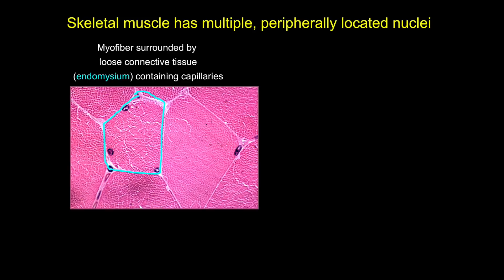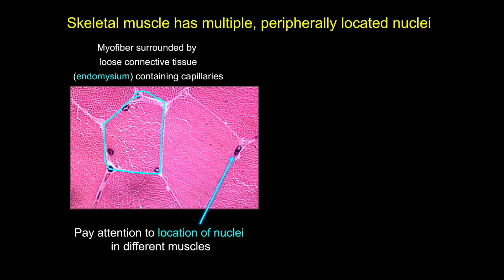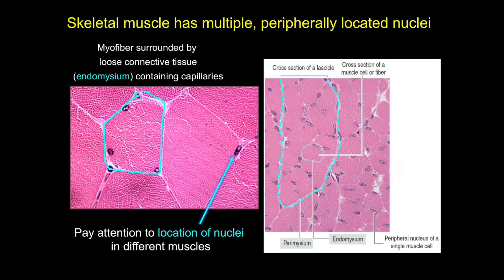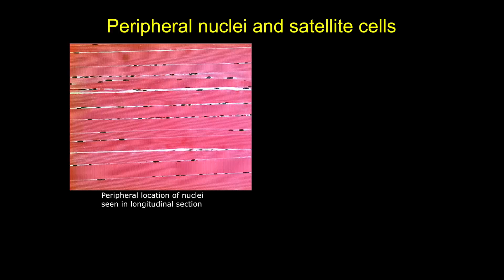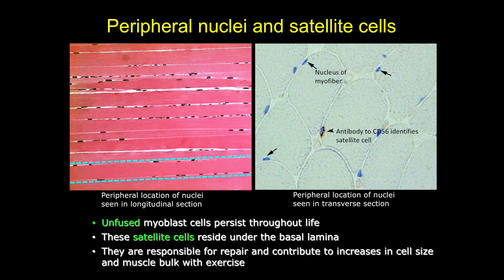Now let's look at what skeletal muscle looks like under the microscope. Each myofiber is surrounded by the endomysium sheath, which in cross-section outlines each pentagonal-shaped fiber. In skeletal muscle, the multiple nuclei are found around the periphery of the cell and almost look as though they're outside the cell. You can see both the perimysium surrounding a fascicle and the endomysium surrounding individual muscle fibers. In longitudinal section, the nuclei look almost as if they are between the fibers. Satellite cells reside under the basal lamina of the muscle cells and are important for repair and regeneration.